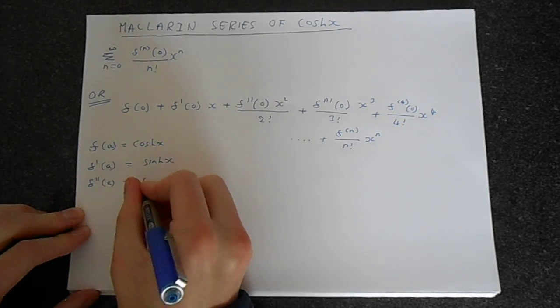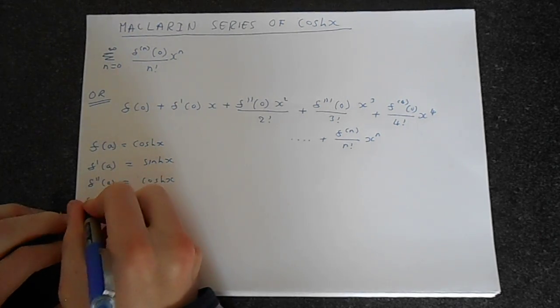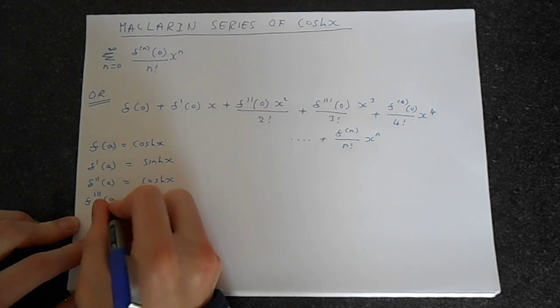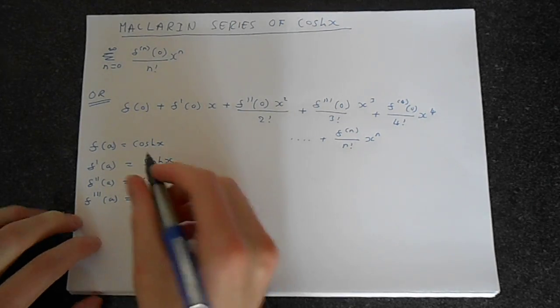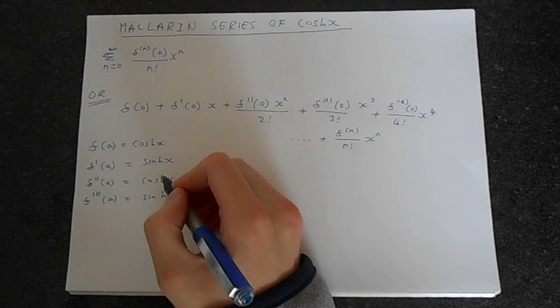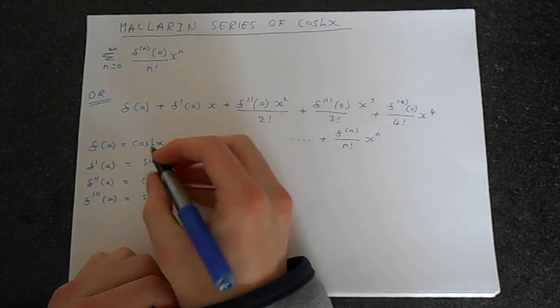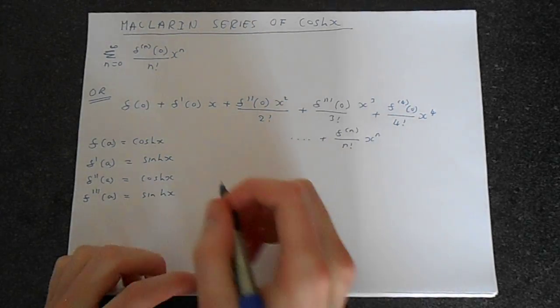And if we take the derivative another time, we're going to get sinh back again. So this pattern repeats. It goes cosh, sinh, cosh, sinh, cosh, sinh. So it switches between the hyperbolic cosine and hyperbolic sine.